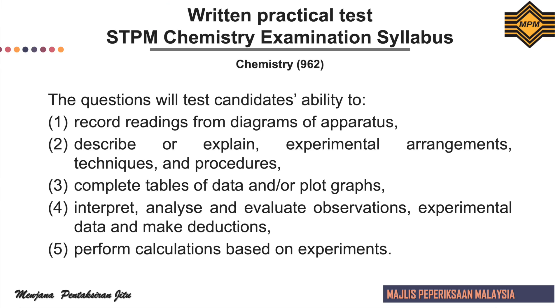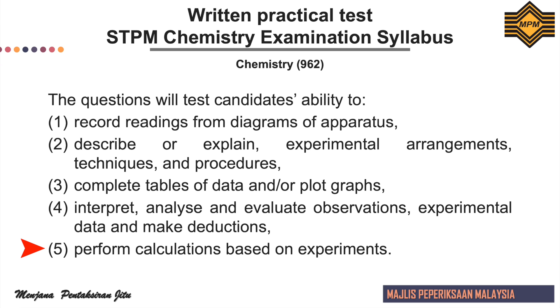For the written practical test, known as Paper 5, the main objective is to assess students' understanding of practical procedures in the laboratory. The questions will test candidates' ability to: 1. record readings from diagrams of apparatus; 2. describe and explain experimental arrangements, techniques and procedures; 3. complete tables of data and/or plot graphs; 4. interpret, analyze and evaluate observations, experimental data and make deductions; and 5. perform calculations based on experiments.